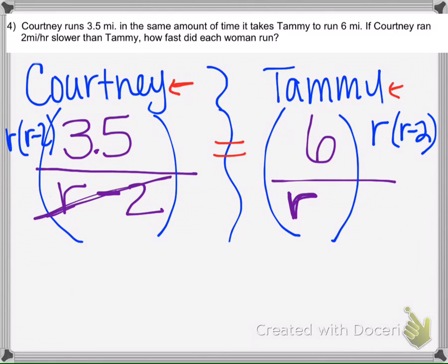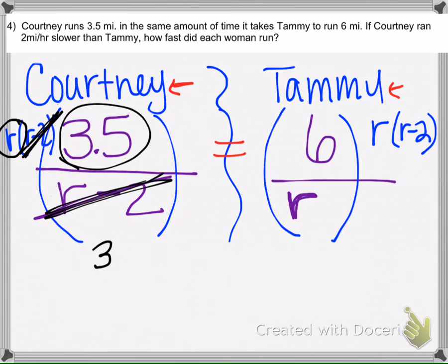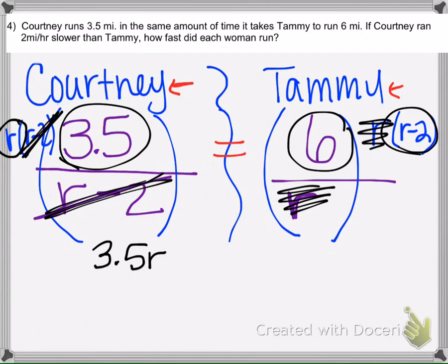So when we do that, this crosses out, divides out with this. So we're left with R times 3.5. Then over here, this R cancels out with this R and we're left with 6 and R minus 2.